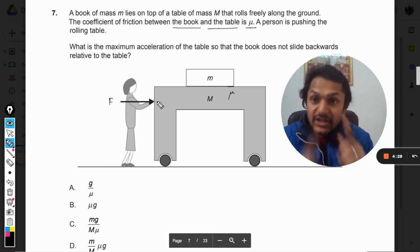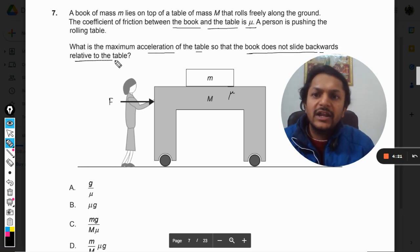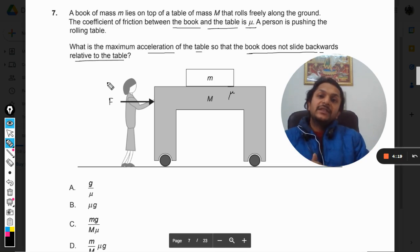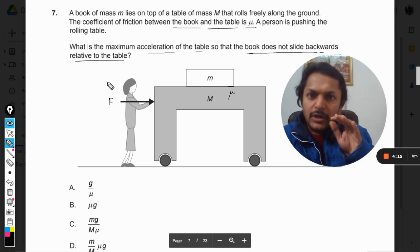What is the maximum acceleration of the table so that the book does not slide backwards relative to the table? It means that because of friction, the book should remain sticking to the table at one location. There should be no relative motion.